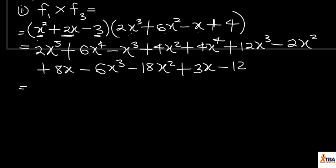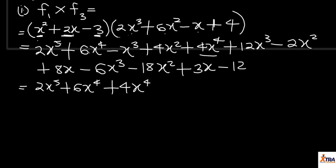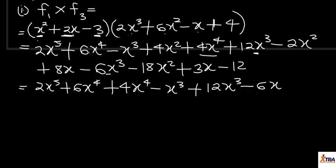The first thing I do is rearrange them to group like terms according to power. The highest power I have is x to the power 5: I have 2x to the power 5. The next highest power is x to the power 4: I have 6x to the power 4 plus 4x to the power 4. Then x to the power 3: I have minus x cubed plus 12x cubed minus 6x cubed. Then x squared: I have plus 4x squared minus 2x squared minus 18x squared.